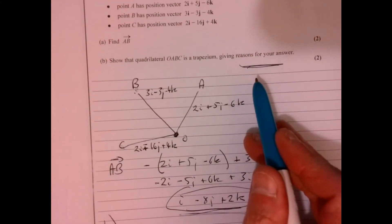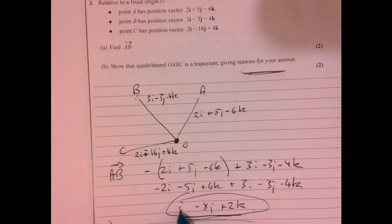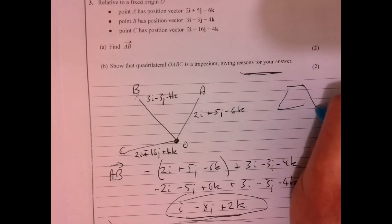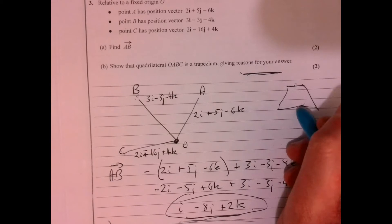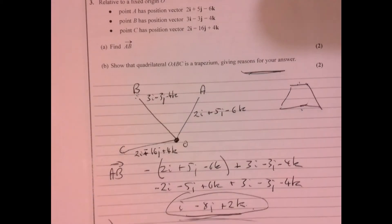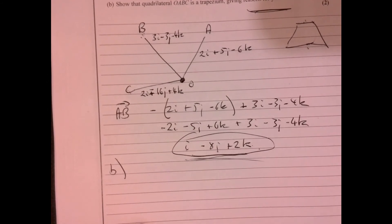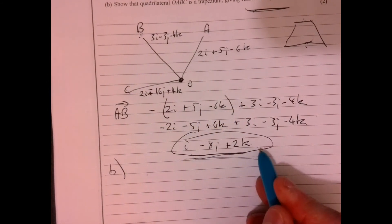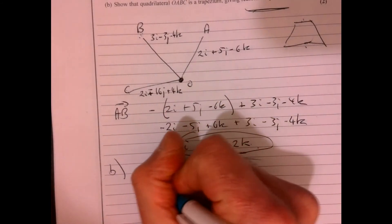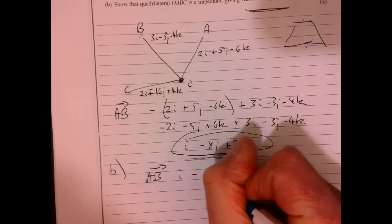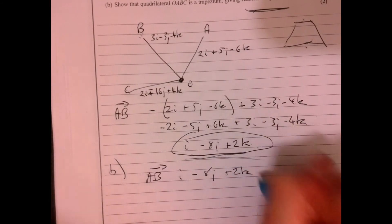What we need to do here is nice and simple - compare this one. Think about a trapezium - it's got to have a pair of parallel sides. So think about vectors. How do you show parallel sides? If we think to ourselves, what was AB? We've got that there. AB is i minus 8j plus 2k.